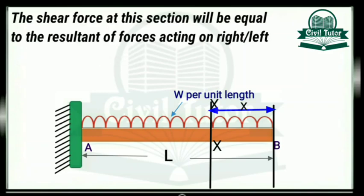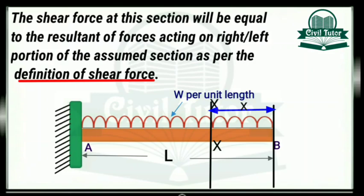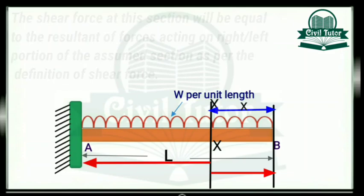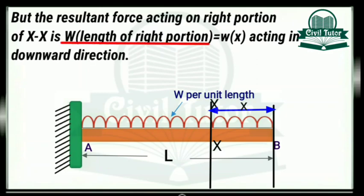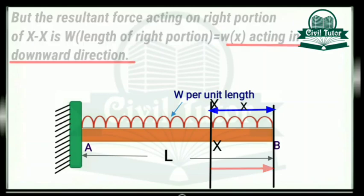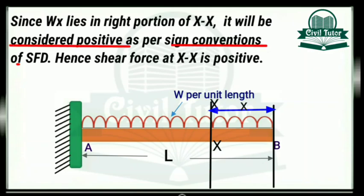The shear force at this section will be equal to the resultant of forces acting on the right or left portion of this assumed section, as per the definition of shear force — which states that the shear force at a section is equal to the resultant of forces either to the right or to the left of that section. The resultant force acting on the right portion of section XX is W into the length of this right portion, which equals WX acting downward. Since this WX lies in the right portion of section XX, it will be considered positive as per sign conventions of shear force.